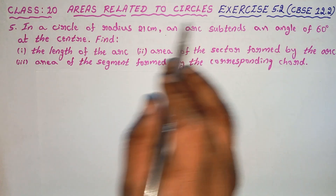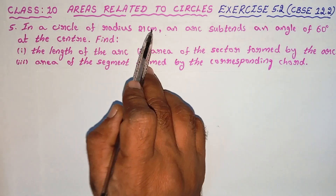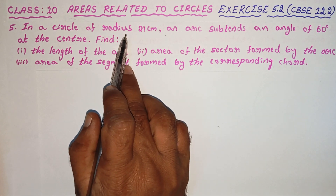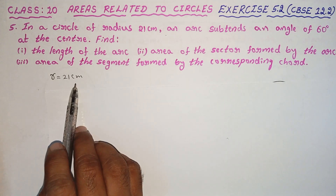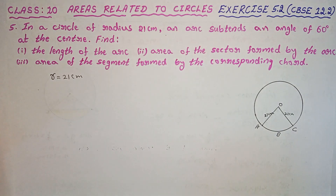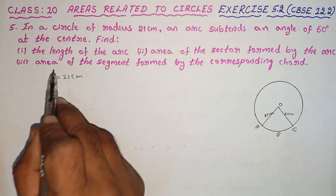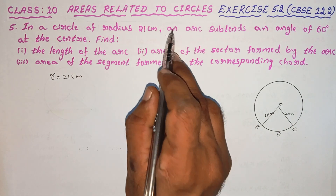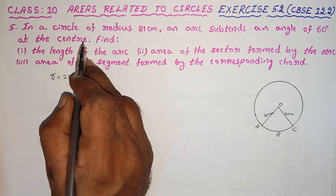Now the question. Given: a circle of radius 21 cm. Radius is 21 cm, so r is equal to 21 cm. Drawing the circle diagram on the screen. OA and OC are radii, each equal to 21 cm. An arc subtends an angle of 60 degrees at the center.